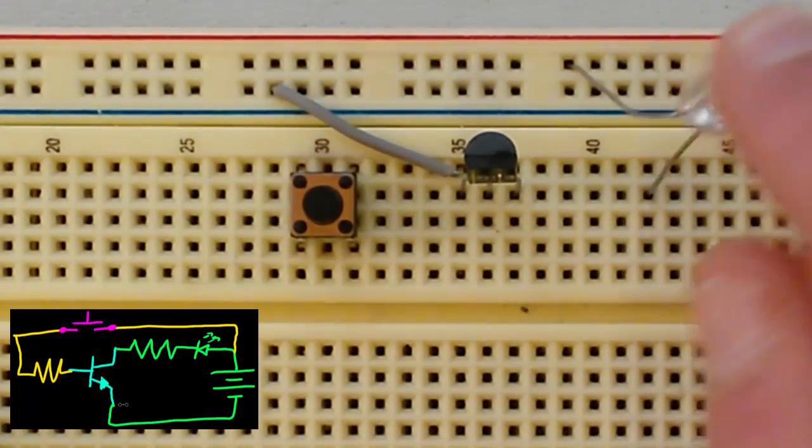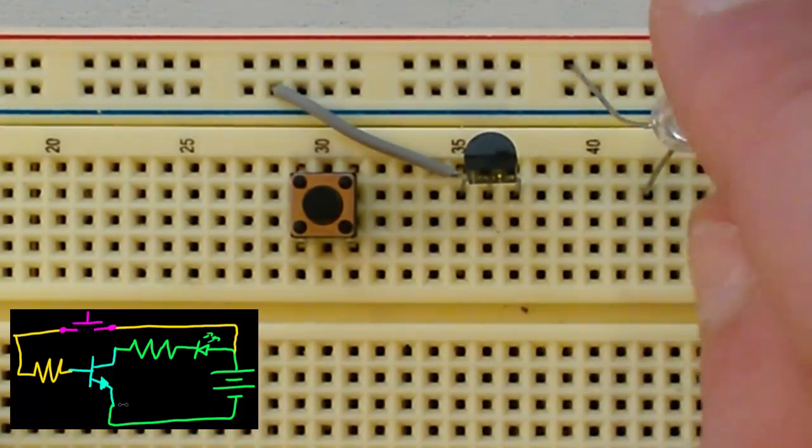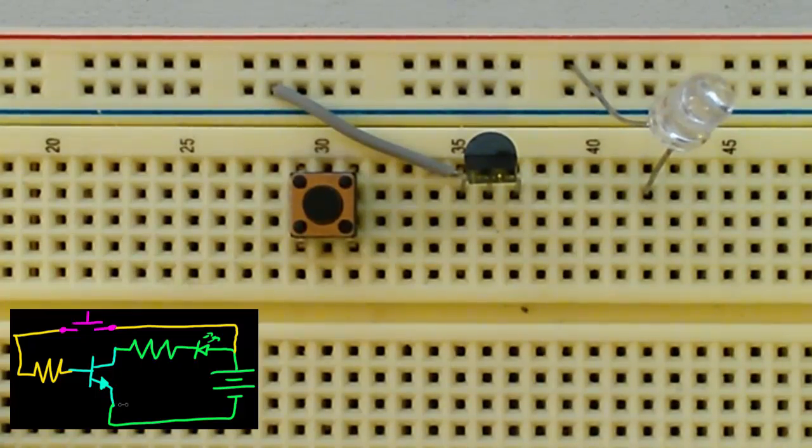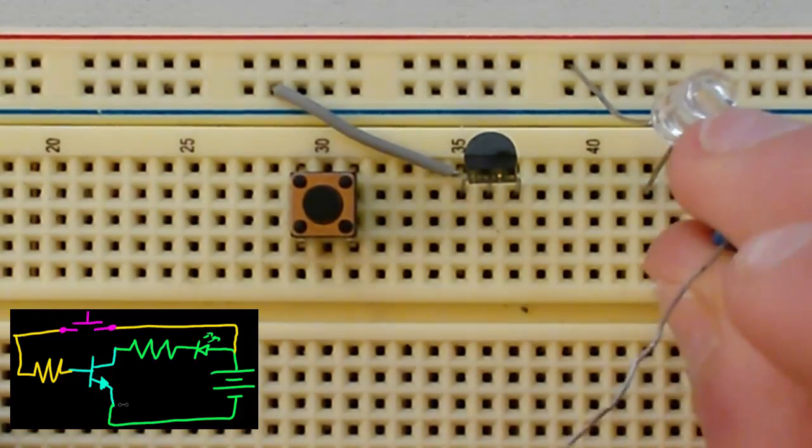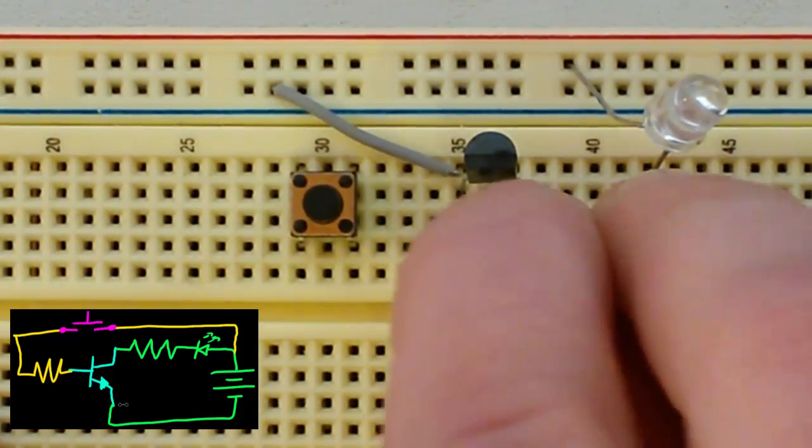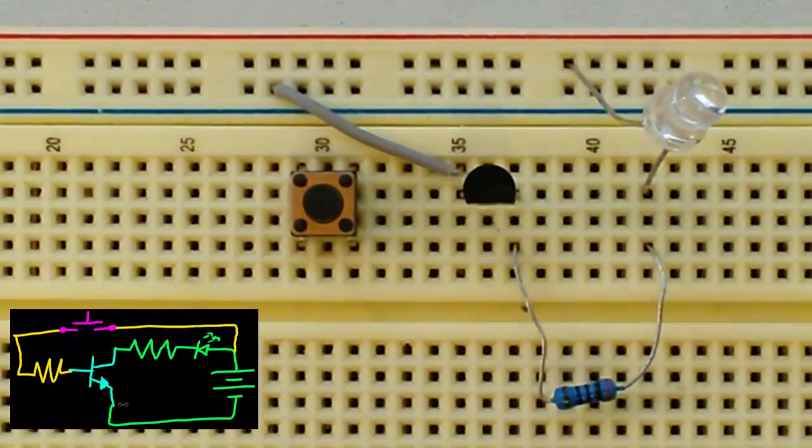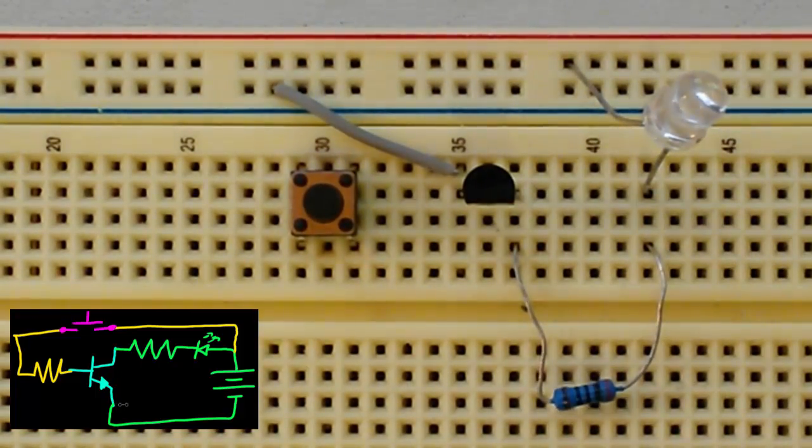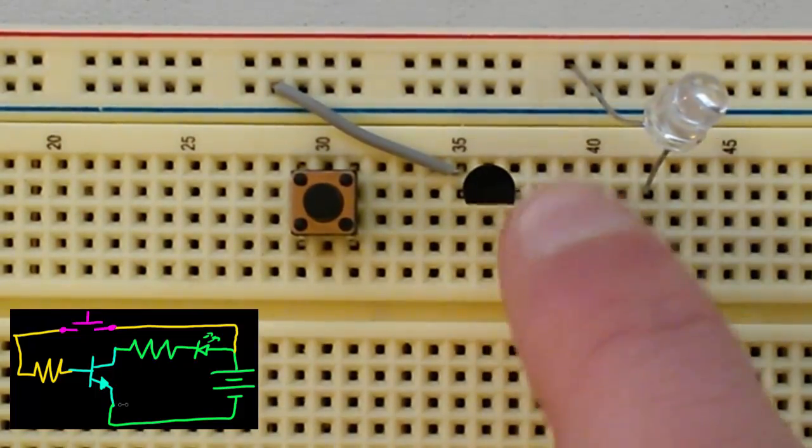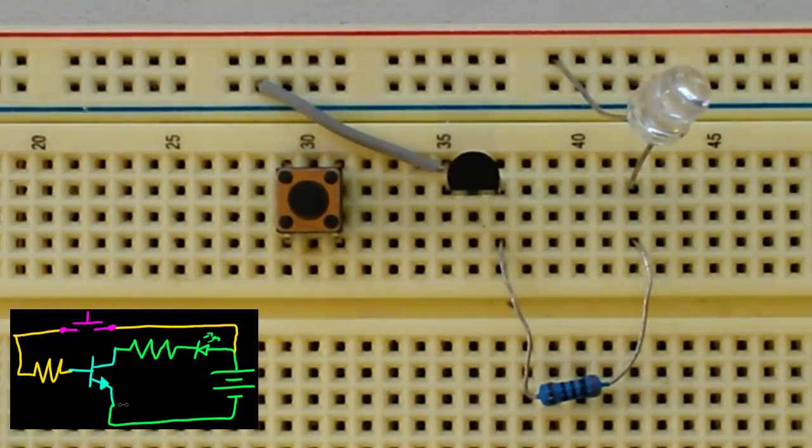Next I have my LED here. I have the longer leg, or the anode, going to the positive power rail of my breadboard. And the shorter leg of the LED, we are just going to connect a resistor to that and going to the collector of the transistor. Now in my case, I am using a 3 volt power source, or two AA batteries. And for this resistor right here, it is a 200 ohm resistor for my LED.